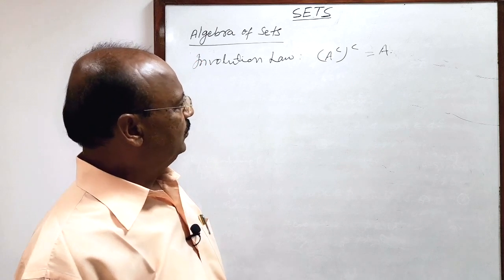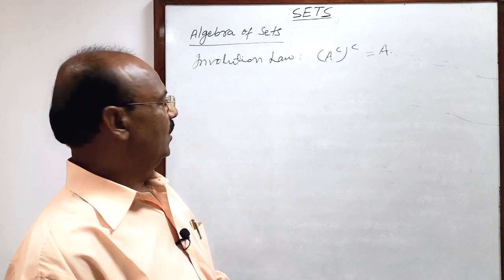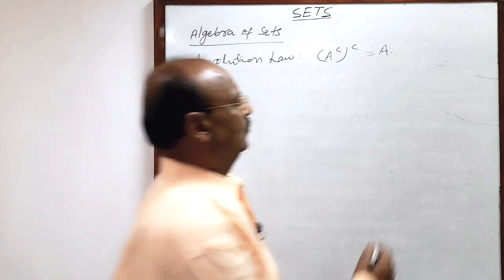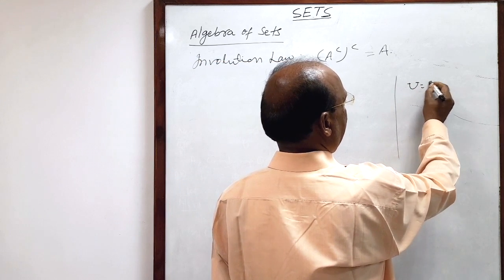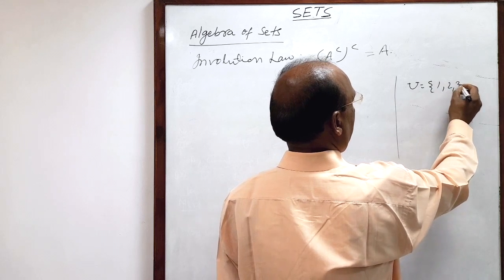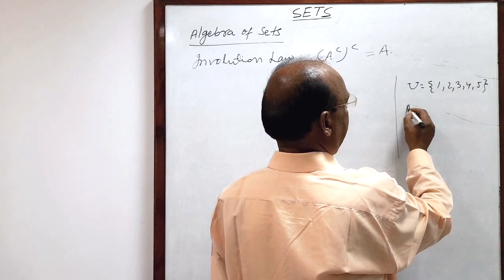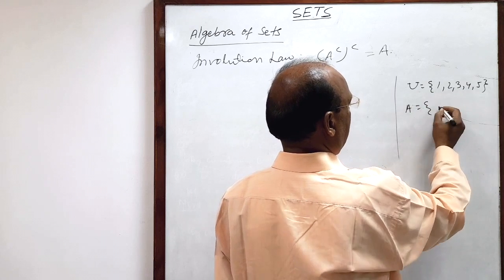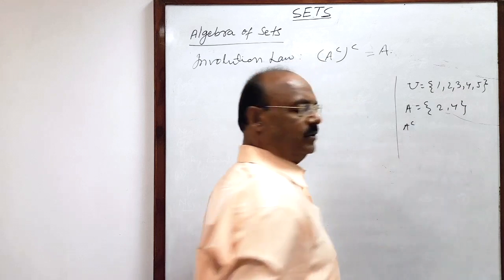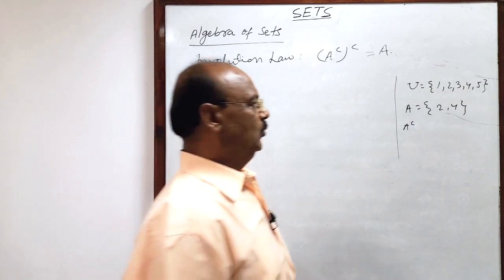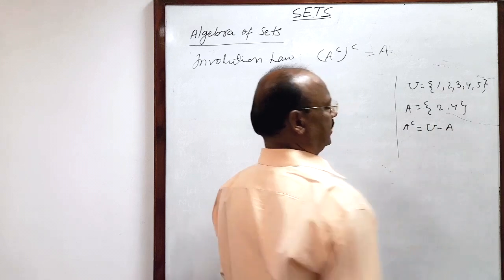I hope you know what the complement of a set is. Let us make it clear first. Suppose the universal set has elements 1, 2, 3, 4, and 5, and set A has the even numbers 2 and 4. Then A complement will be the universal set minus set A.